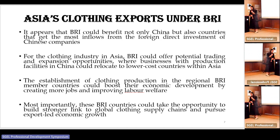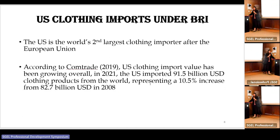The establishment of clothing production in regional BRI member countries would increase their economic development by creating more jobs and improving labor welfare. These BRI countries would take the opportunity to build stronger links to the global clothing supply chain and increase export-led economic growth globally. The US is chosen as the importer because it is the world's second largest clothing importer after the EU. According to Comtrade 2019, US clothing import value has been growing overall. In 2021, the US imported 91.5 million USD of clothing products from the world, representing around a 10% increase since 2008.